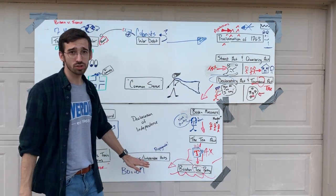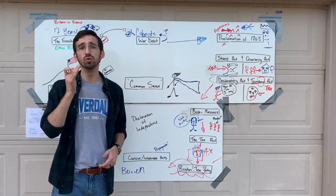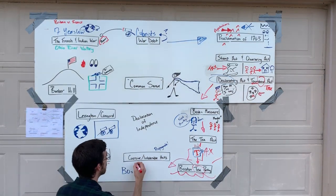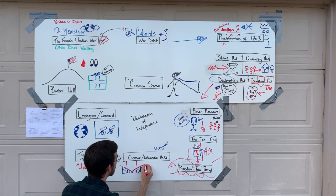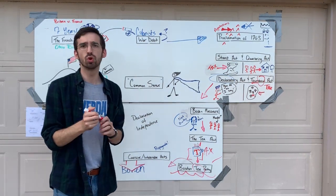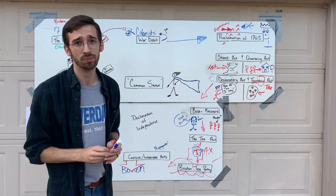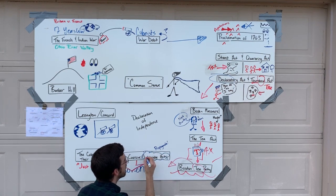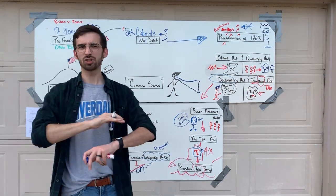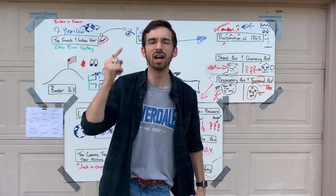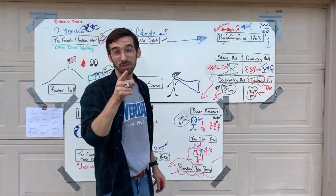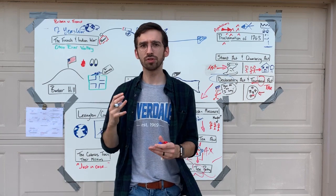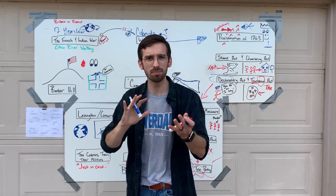In response to the Boston Tea Party, Britain passes a new group of acts called the Coercive Acts. The entire purpose of the Coercive Acts is to press down on the city of Boston — to crush them and grind them into submission. The people in Boston call them the Intolerable Acts, because these acts are so wicked and vile they will not tolerate them. That's an excellent example of propaganda, and it shows that colonists' opinions about the British government are beginning to shift.